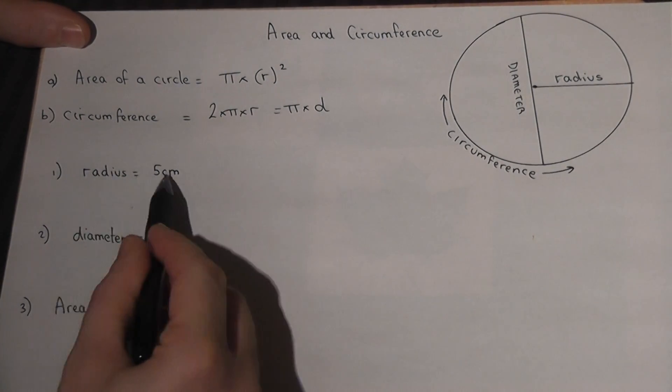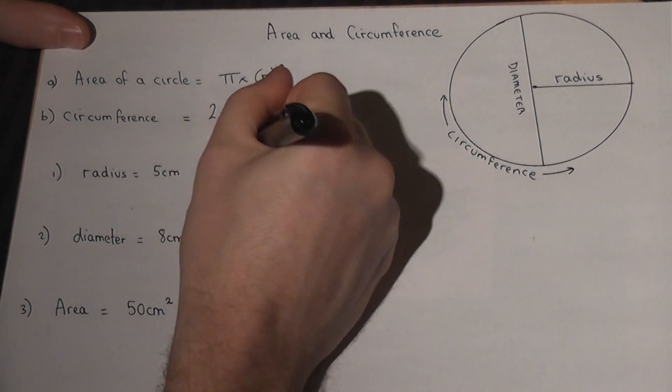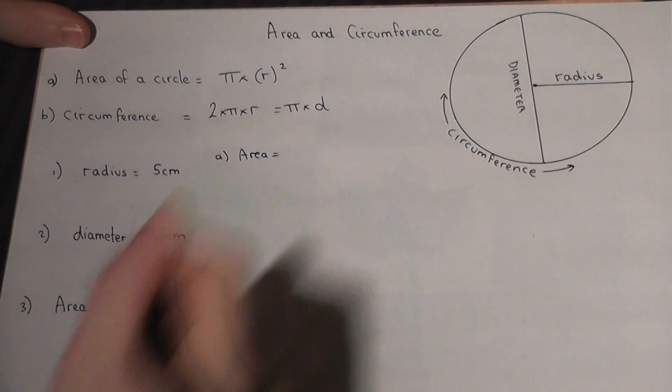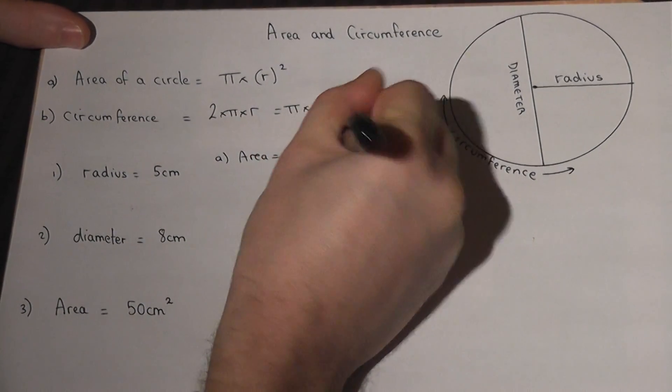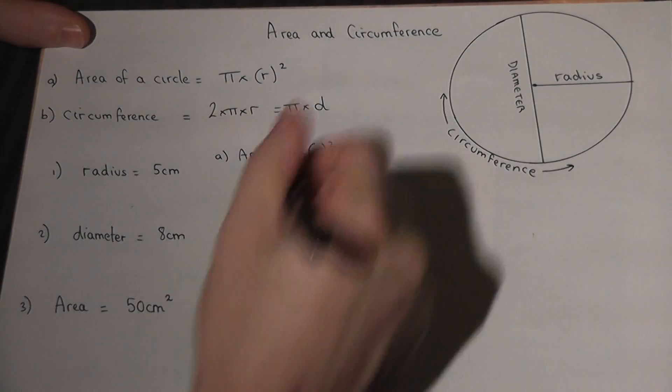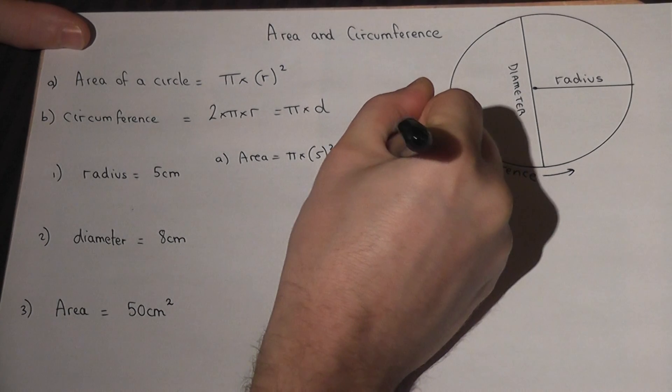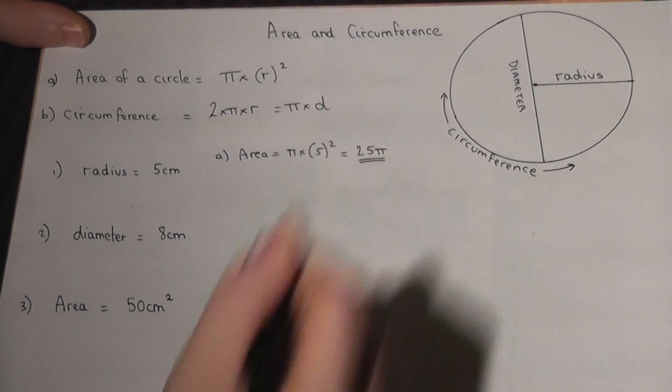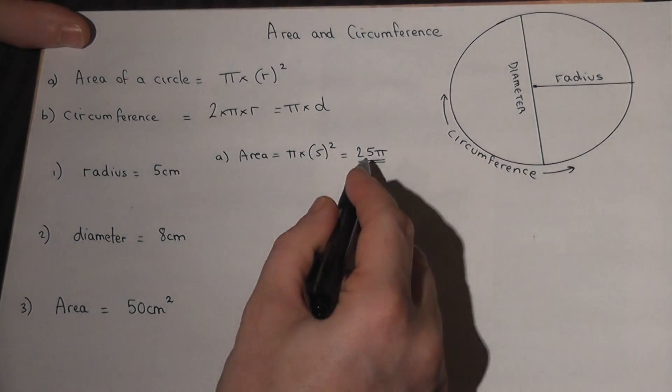If the radius is 5cm and we want to find the area, the area equals π times 5 squared. 5 squared is 25, so it's 25π. On a calculator, you can work that out using the π button, but I will leave the answer in terms of π.